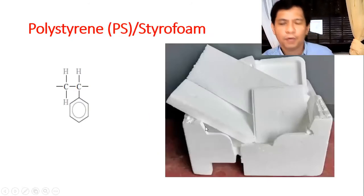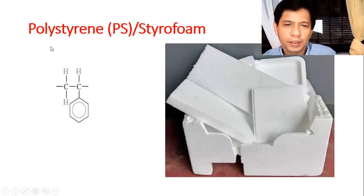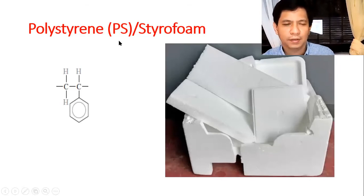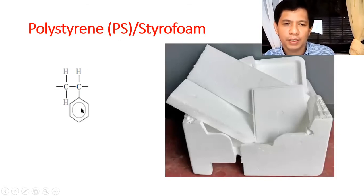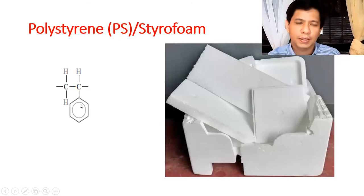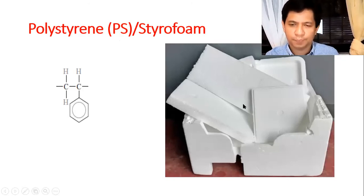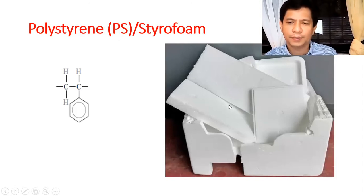Styrofoam is polystyrene or PS. Like polyethylene, ethylene is the base — but one hydrogen is replaced by a benzene ring. Adding a catalyst to styrene produces polystyrene, from which styrofoam is made.